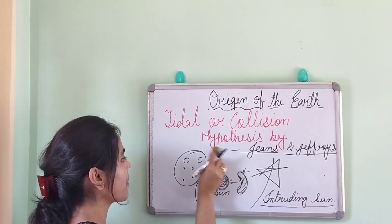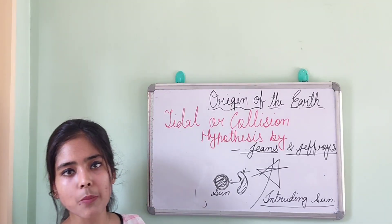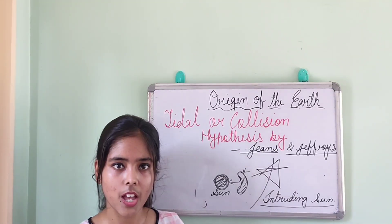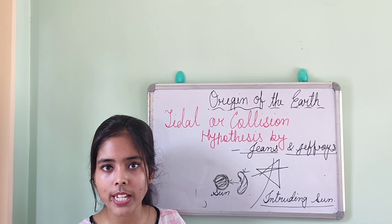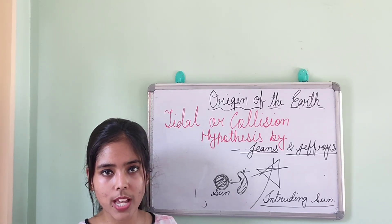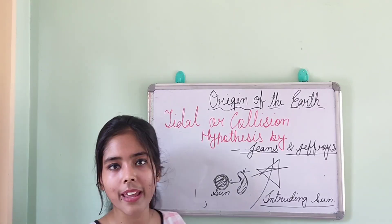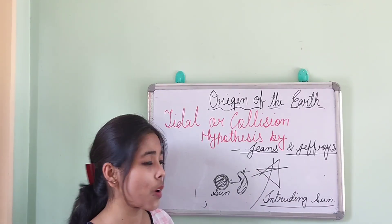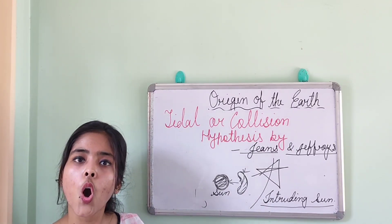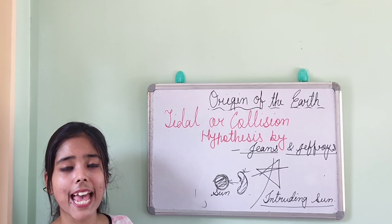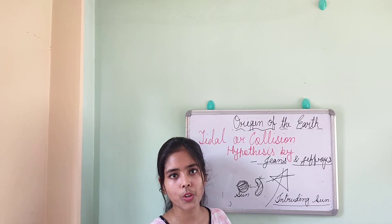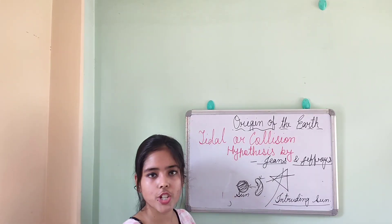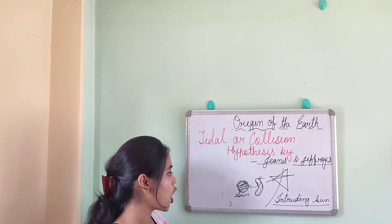The theories of Chamberlin and Moulton and of Jeans and Jeffreys are more or less the same. Both describe two heavenly bodies: one is the sun — called the proto-sun by Chamberlin and Moulton, and the normal sun by Jeans and Jeffreys — and one is an intruding sun larger in shape than our original sun. Because the intruding sun has more mass and weight, it exerts more gravitational pull on the original sun, drawing out a tongue-shaped or cigar-shaped body.